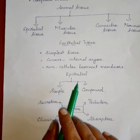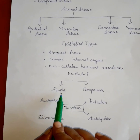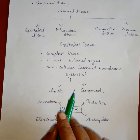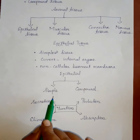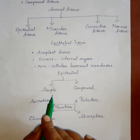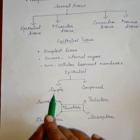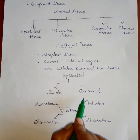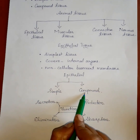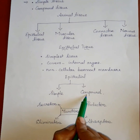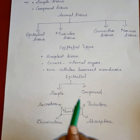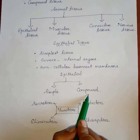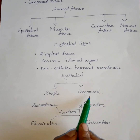There are two types of epithelial tissue: simple epithelium and compound epithelium. Simple epithelium is made up of a single layer of cells. Compound means more than one, so compound epithelium is made up of more than one — several layers of cells.